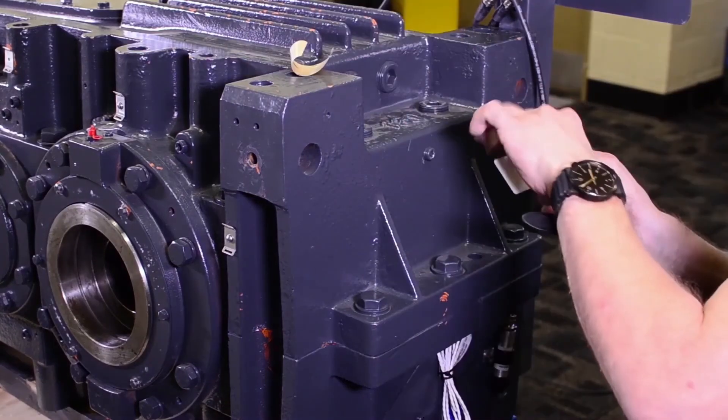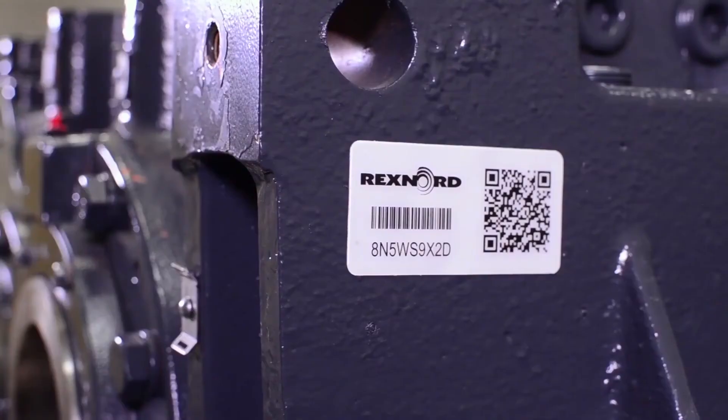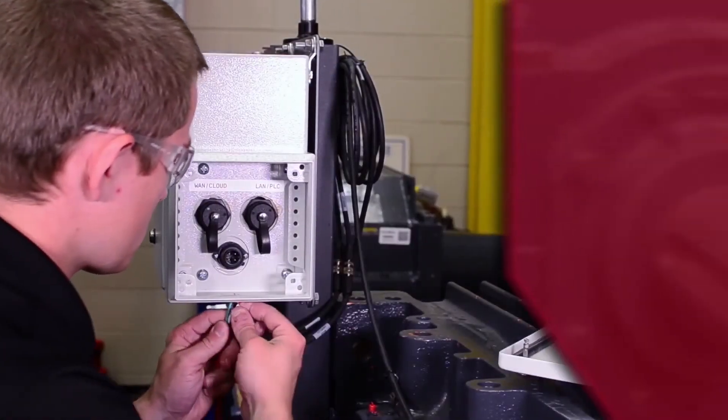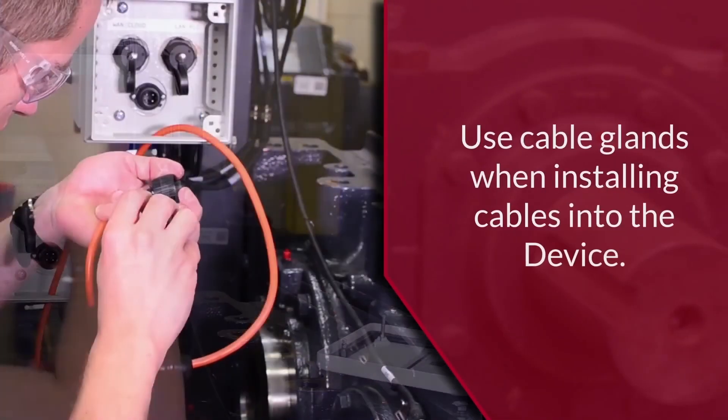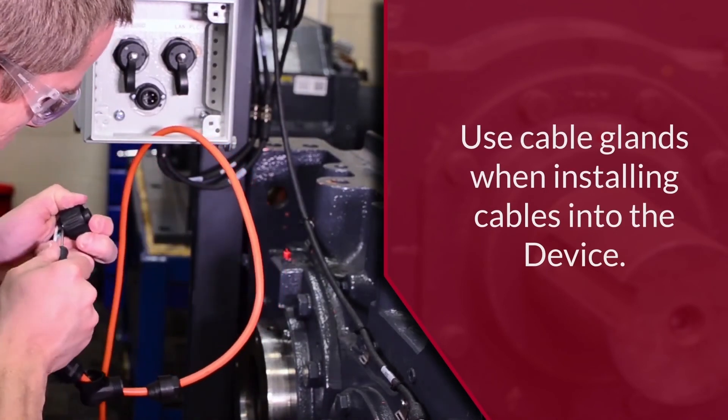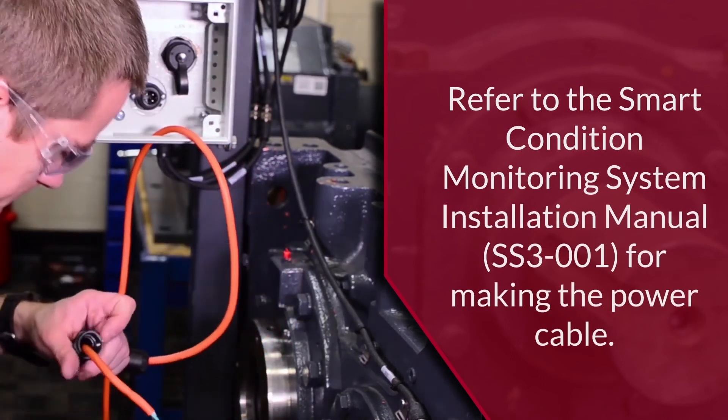Apply one of those tags to the gear drive in a location that is visible and accessible when the drive is in service. Have a licensed electrician use the connector to make a power cable for the edge device. A knockout punch can be used to punch holes in the top or bottom of the interface box for the conduit.